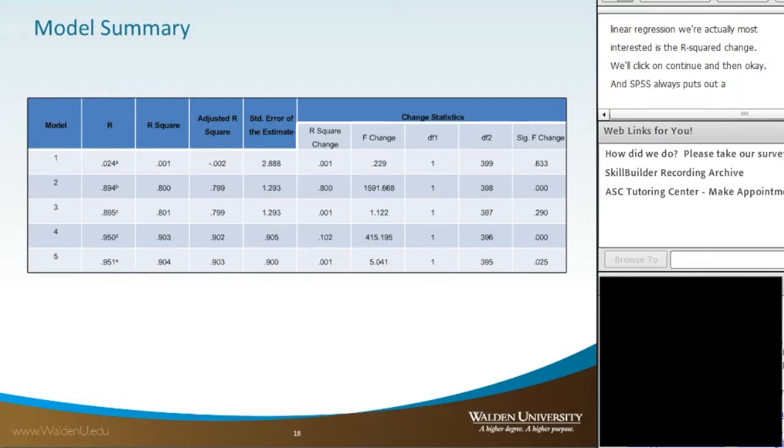We'll click Continue and then OK. SPSS puts out a lot of tables. The first table we're going to look at is the Model Summary. For Model 1, on the far left-hand side, it gives us our R which is 0.024, and then our R-squared which is 0.001. The R-squared change for Model 1 measures from the previous model to the current model. The SIG value is 0.633, which represents the p-value, substantially larger than our traditional 0.05, so Model 1 is not statistically significant.